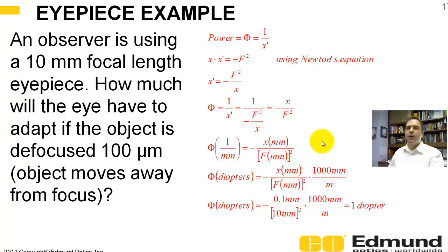Here's an example. We have a 10 millimeter focal length eyepiece. How much will the eye have to adapt if the object you're looking at through the lens is defocused 100 microns? And in this case, we're going to say the object moves away from focus. Now you go through the equations here, and it turns out it's about a diopter, and you'll be a positive diopter.